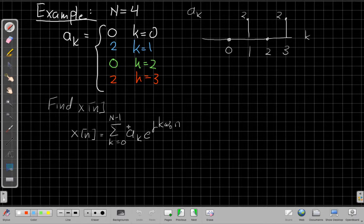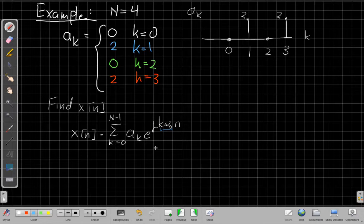And just a reminder that we call this the harmonic. K times omega 0 is the frequency of that harmonic. So we have omega 0, 2 omega 0, 3 omega 0, and actually 0 omega 0 is like the DC term.